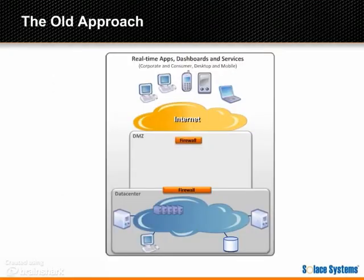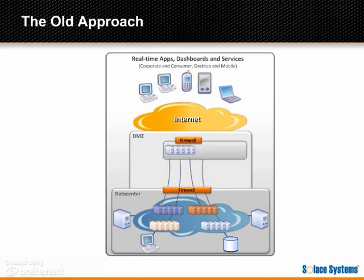Most middleware platforms don't support streaming over the Internet, so you need to add a new layer to your system, bridge it to existing platforms, and use a new API to expose information to web and mobile devices. Most such Internet streaming products are Java software with limited throughput and unpredictable performance, so you need to deploy lots of instances to achieve enterprise-class scale and speed.